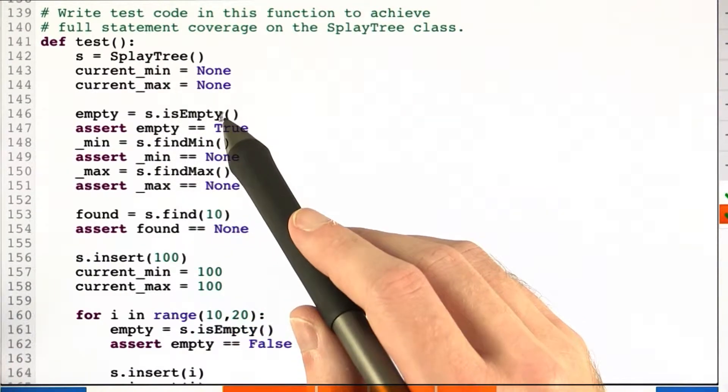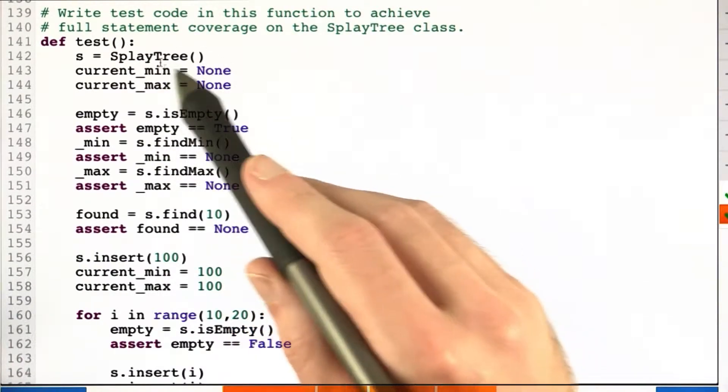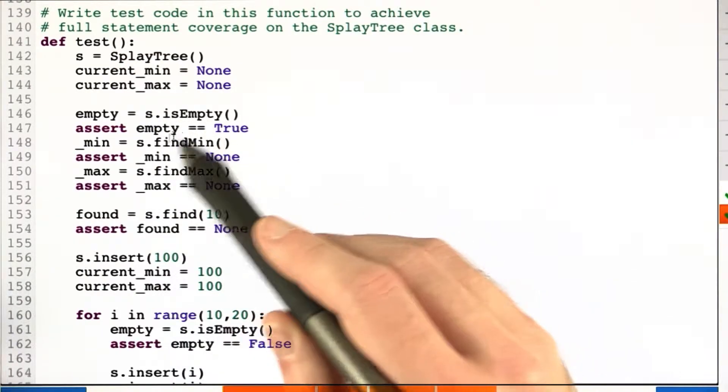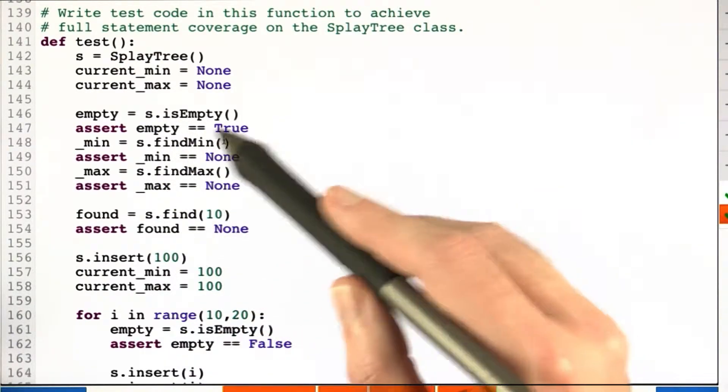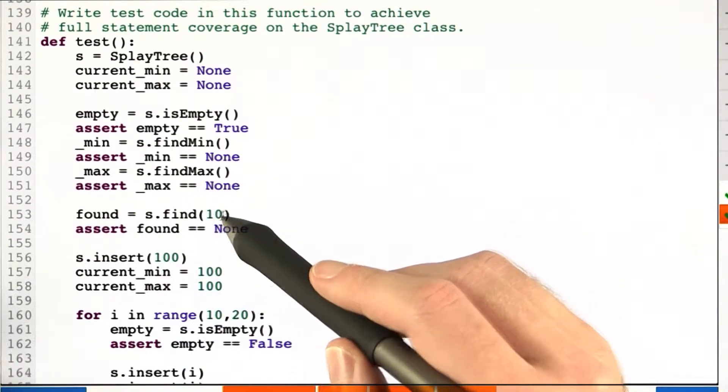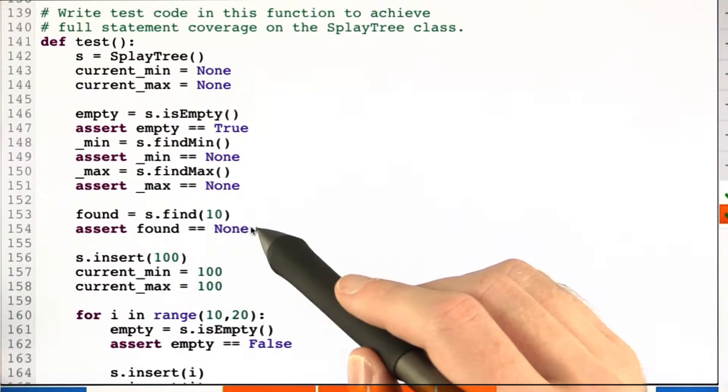And we check whether the empty splay tree is actually empty, that is, its empty method returns true. And similarly for find min and find max, since it's empty, there can't be any min and max. And that when we search an empty splay tree, we also return none.